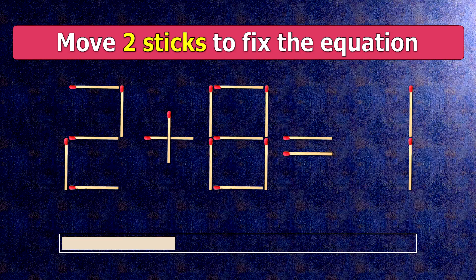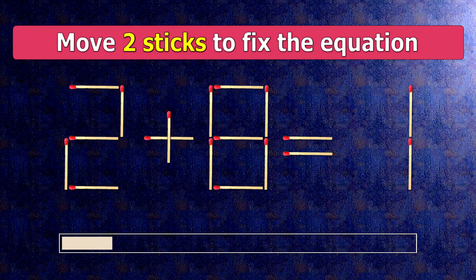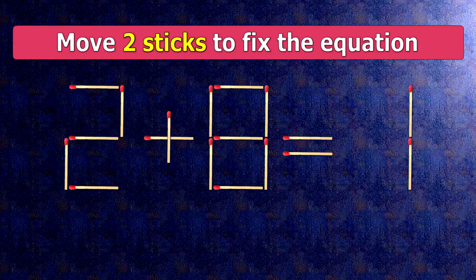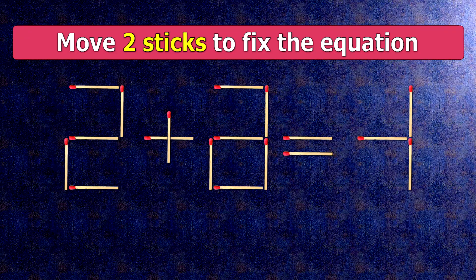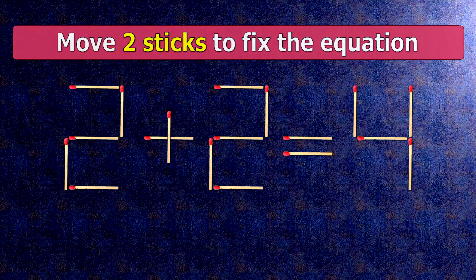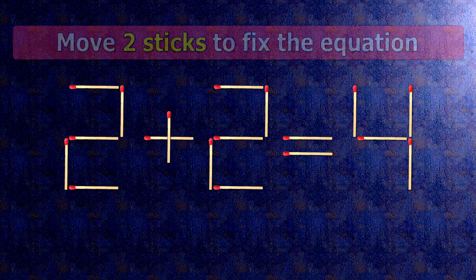We need to move the two matches for our equality to be correct. All we need to do is move this match right here and this match right here. Now when we check the condition, 2 plus 2 is 4.